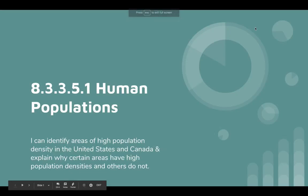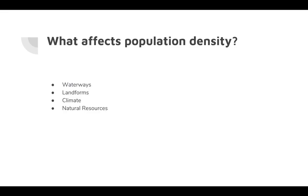Today's lesson is 8-3-3-5-1 on human populations. Your I Can statement for this lesson is: I can identify areas of high population density in the US and Canada, and then explain why certain areas have high population densities and others don't.